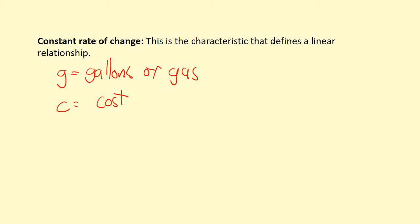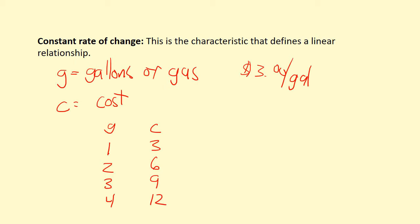So what happens when gas is three dollars per gallon? When you buy one gallon, the cost is three dollars. Two gallons, the cost is six dollars. Three gallons, the cost is nine dollars. What makes this linear is that each time you go up one gallon, your cost goes up the same amount — three dollars. That's what I mean by a constant rate of change.